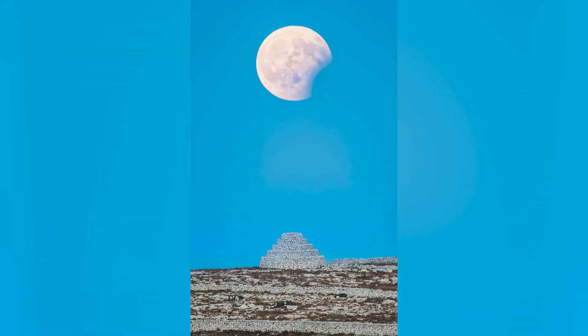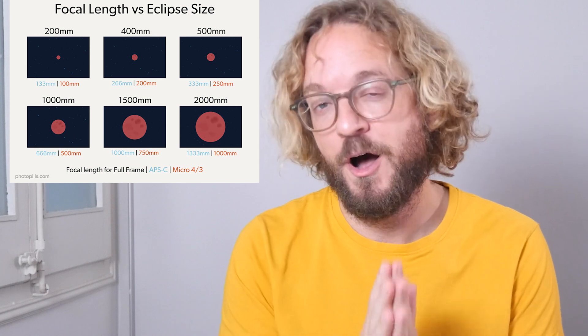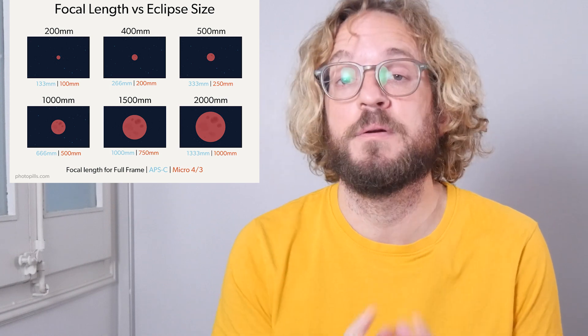Whether your goal is to photograph only the phases of the eclipse with no foreground, or to photograph the eclipse aligned with an interesting subject, you'll need the same equipment you need when photographing the moon. You'll need your tripod, your camera, and a telephoto lens — 300mm, 400mm, 500mm or more. The longer the better. A crop sensor camera will benefit from the multiplying effect on the focal length.